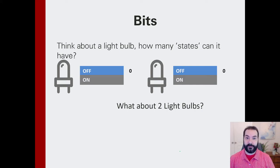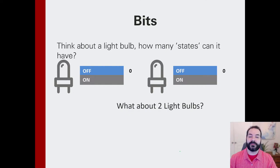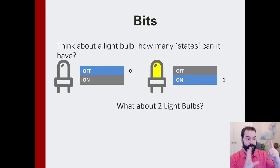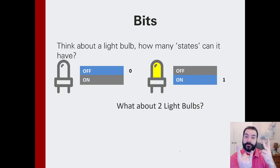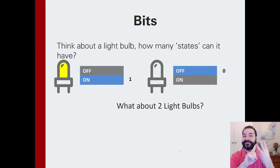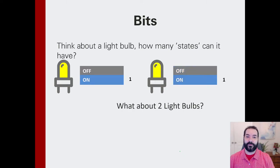Now we're thinking about the different states that two lights could operate in. First: both are off — that is a state. What if one turns on but the other stays off? Left light off, right light on — that's a second state. We could do the opposite: left on, right off — a different state entirely. And the fourth state is when both lights are on.